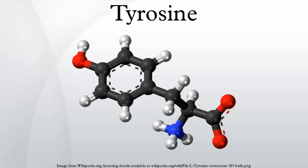The word tyrosine is from the Greek tyros, meaning cheese, as it was first discovered in 1846 by German chemist Justus von Liebig in the protein casein from cheese. It is called tyrosyl when referred to as a functional group or side chain.